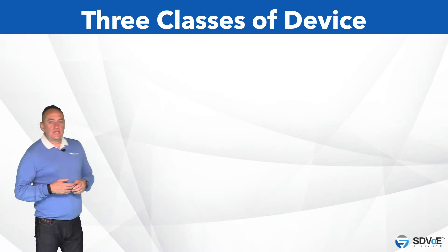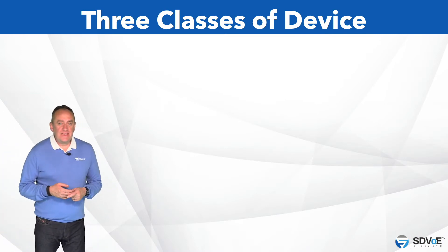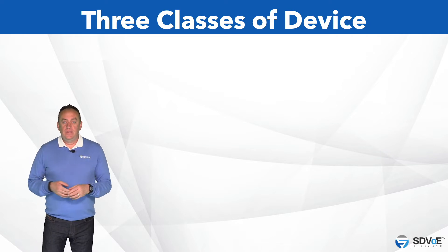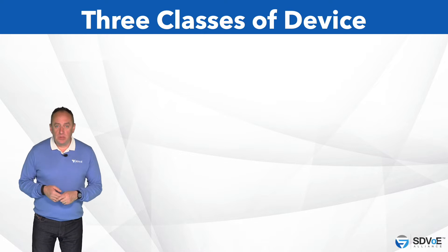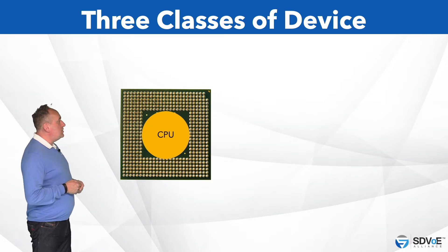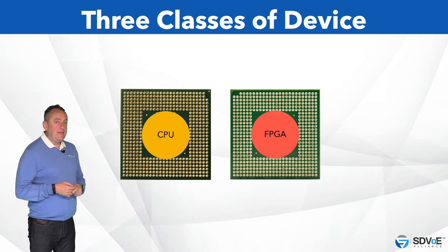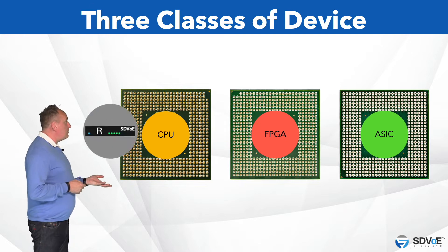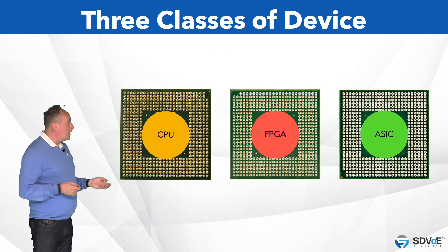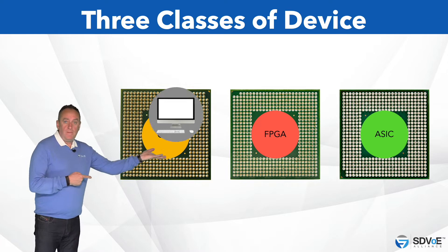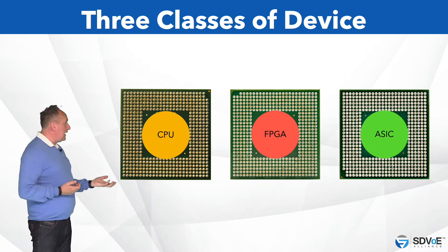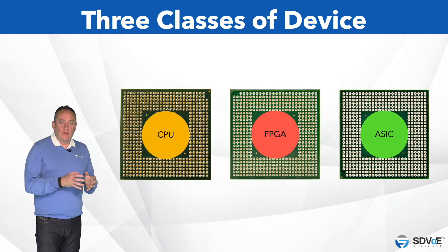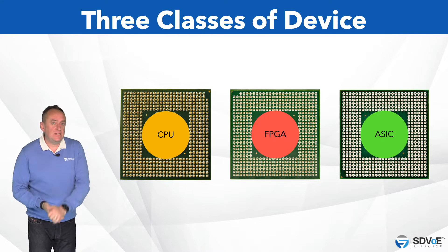When an electronics manufacturer builds a product there's generally one main chip that performs the product's function. Now there are three classes of device which might serve this purpose: CPU, FPGA, and ASIC. Whether you have an AV over IP widget, a computer, or even a calculator there's a chip on board that device which is going to do the job that you need it to do.